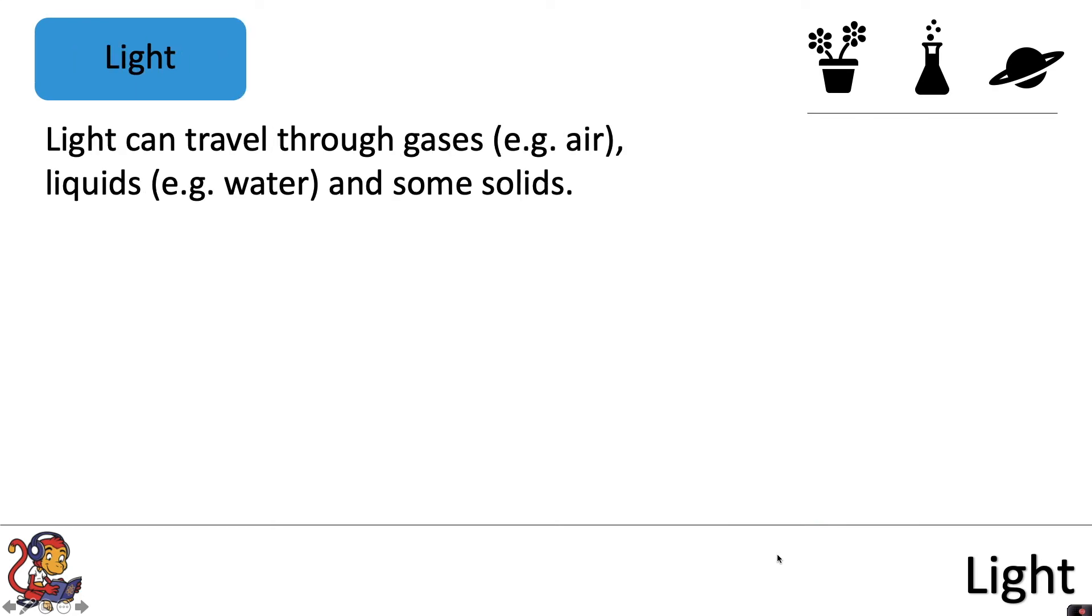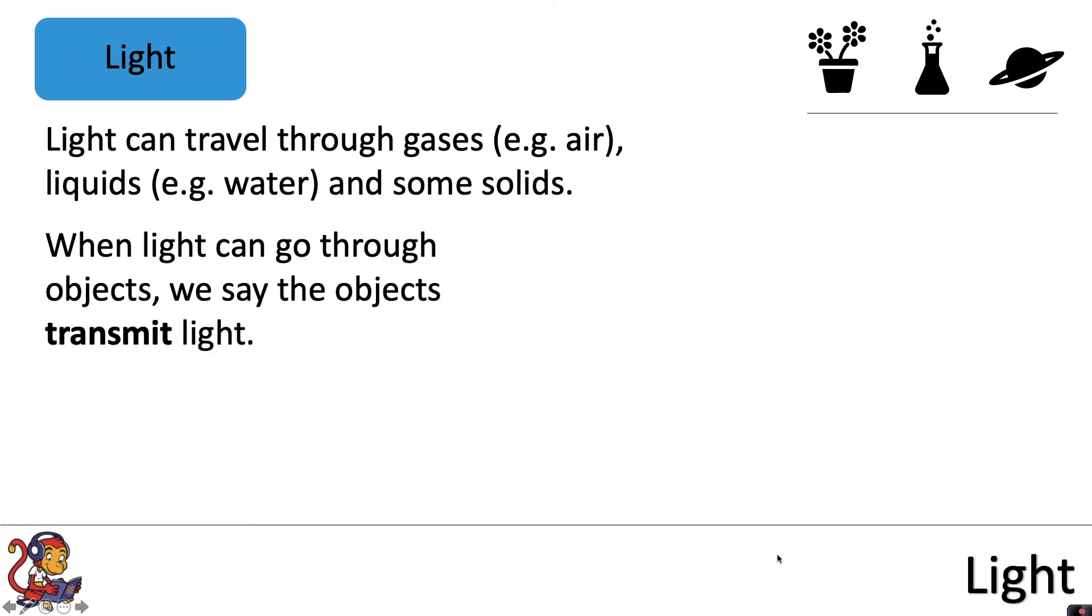Light can travel through gases, for example, air. Light can travel through liquids, for example, water, and also some solids. When light can go through objects, we say the objects transmit light.